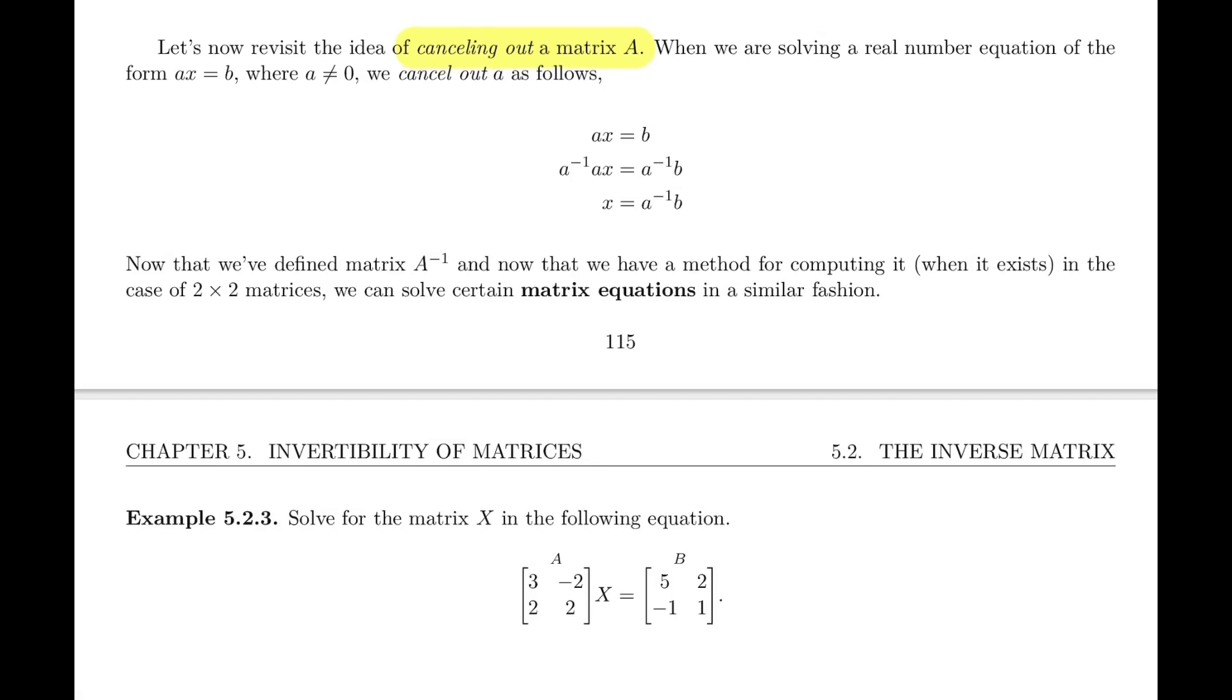Remember when we look at real number equations such as ax equals b. For example, if I write 3x equals 7, how do we solve that? We multiply both sides by 3 inverse, or in other words we divide both sides by 3, and we end up with x equals 3 inverse times 7.